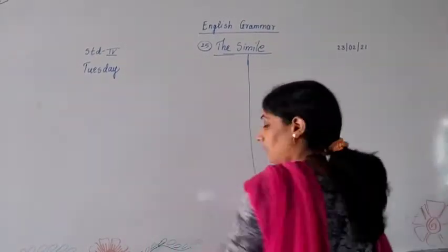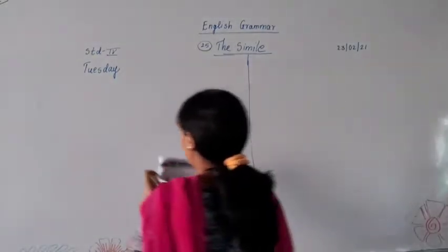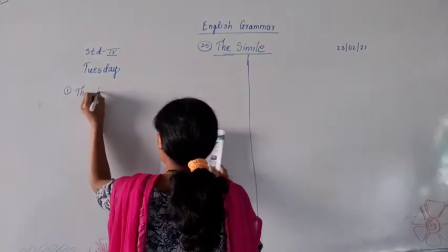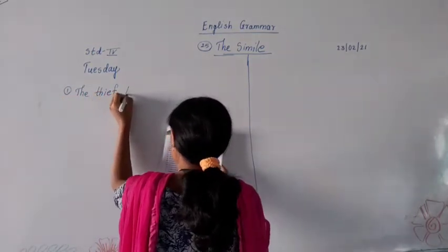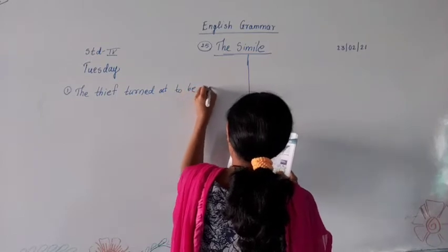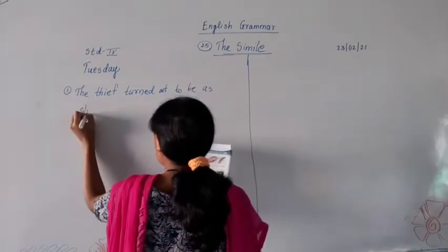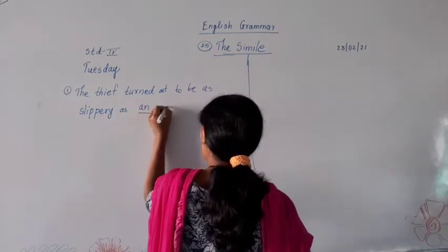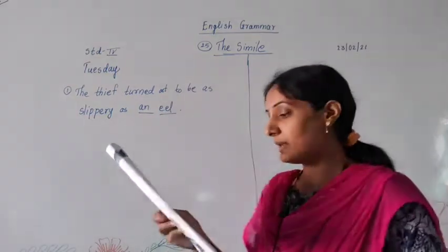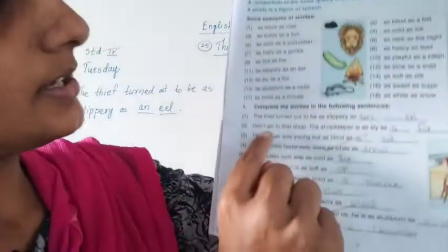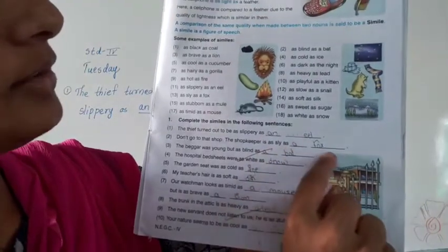First one: the thief turned out to be as slippery as an eel. Second one: don't go to that shop — the shopkeeper is as sly as a fox.